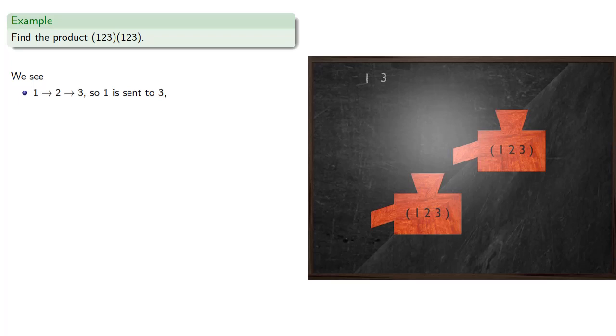And in our cycle notation, we would follow 1 with 3. But wait, there's more. So now we're at 3, let's see where 3 goes. So we'll drop 3 into our first function, which gets sent to 1. And 1 gets dropped into the second function, which sends it to 2.